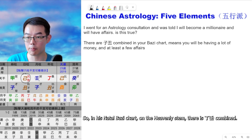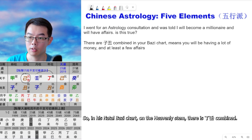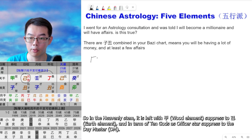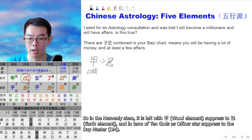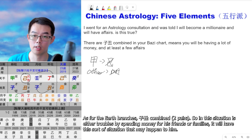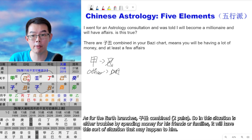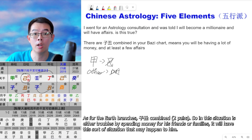So in his Ba Zi chart, on the heavenly stem, there is a Ding-Ren combination. So the heavenly stem is left with Jia, wood elements, suppressed to Ji Earth elements — in terms of the ten gods, as officer star suppressed to the day master. As for the earth branches, zi-chou combined. So in these situations, he is either troubled by spending money for his friends or family.